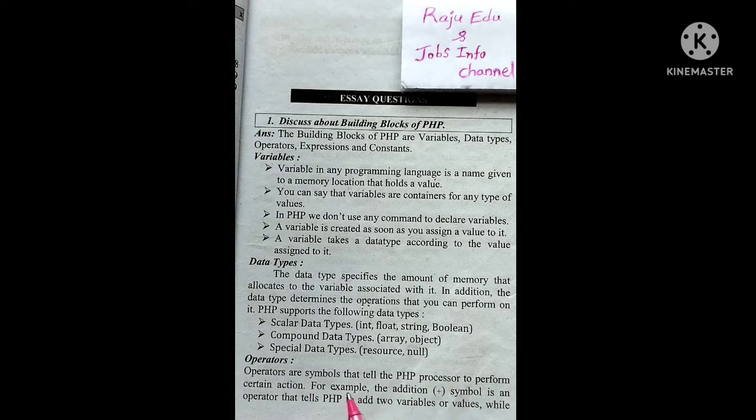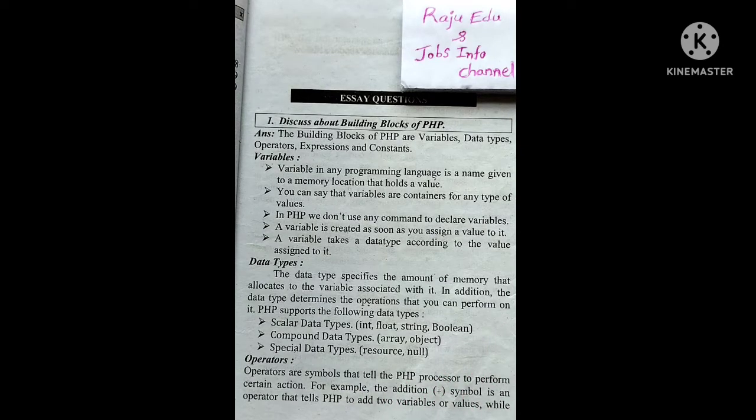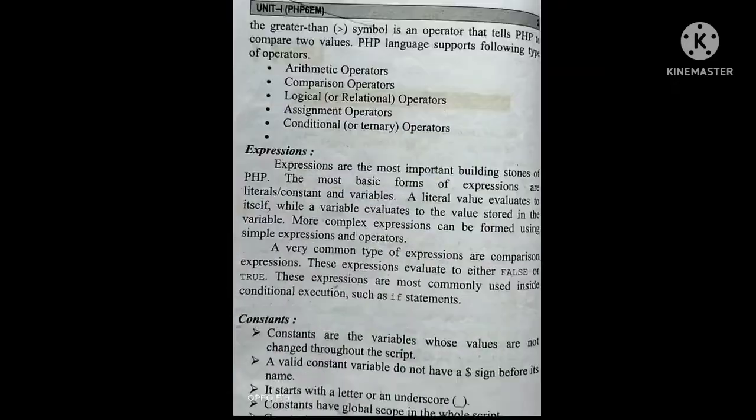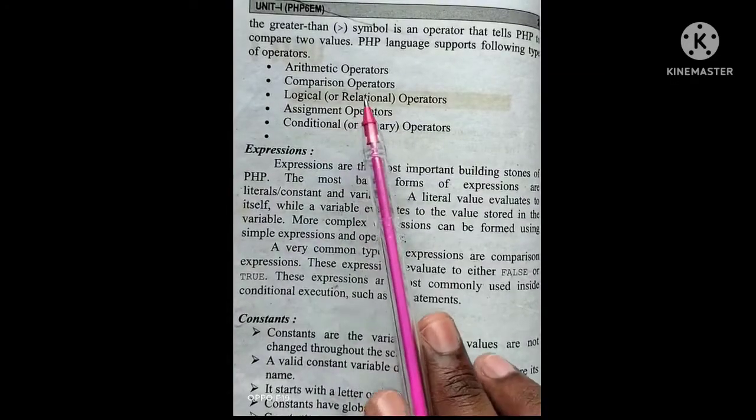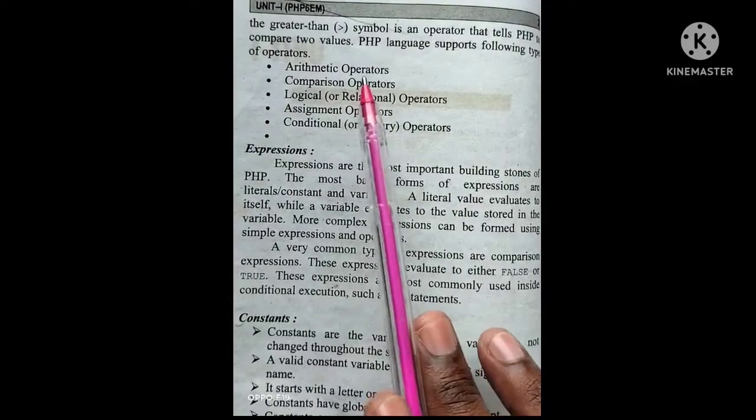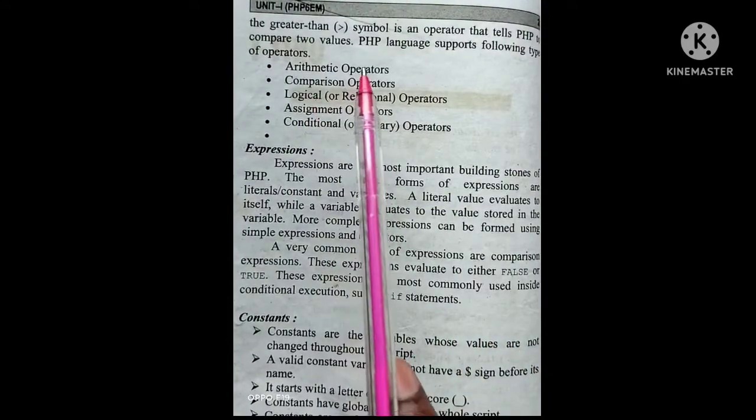Next, operators. An operator is a symbol used to perform operations. Operators are symbols that tell the PHP processor to perform certain actions.